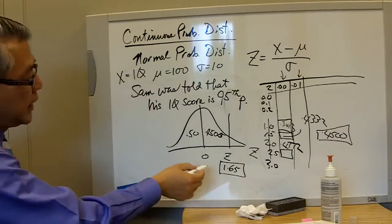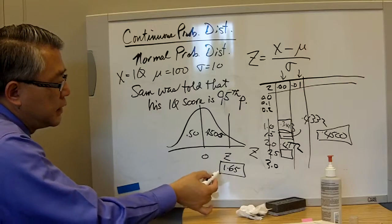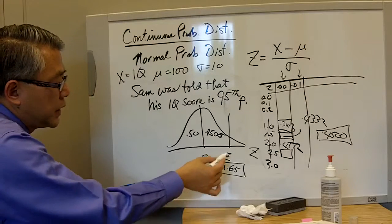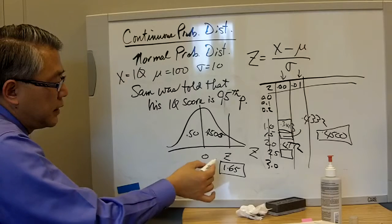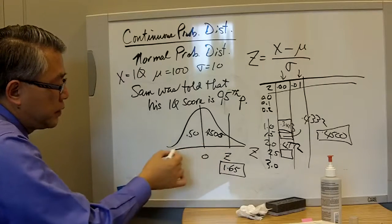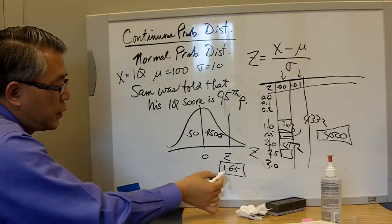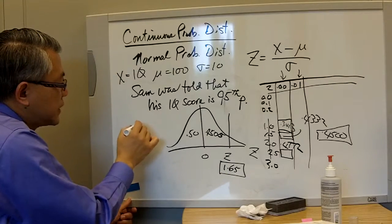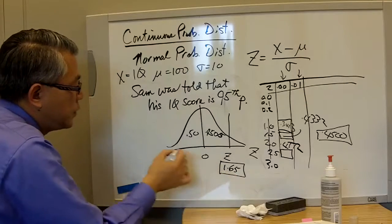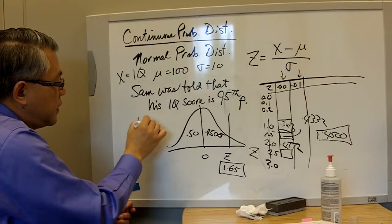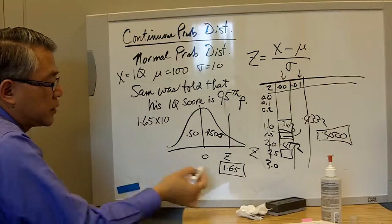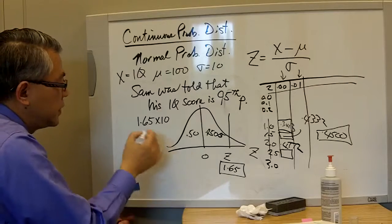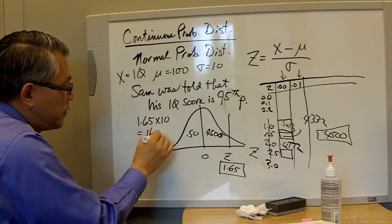So basically I have found the Z score that is equivalent to the 95th percentile. So what is 1.65? Well, 1.65 is nothing more than 1.65 multiplied by 10, because the standard deviation is 10, so it is 16.5.